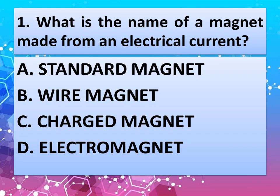This is our first question: What is the name of a magnet made from an electrical current? Read the options very carefully, give your answer in the comment box. And the correct answer is option D, electromagnet.